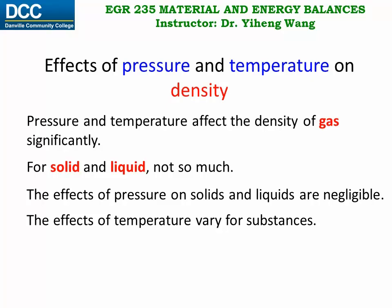That is how a mercury thermometer works to indicate the change in temperature. Empirical functions — functions created mainly based on experimental observations rather than theory — have been developed for some common liquids and solids to characterize the temperature-volume relation. This information can be found in your textbook, engineering handbooks, or online. The following is an example.